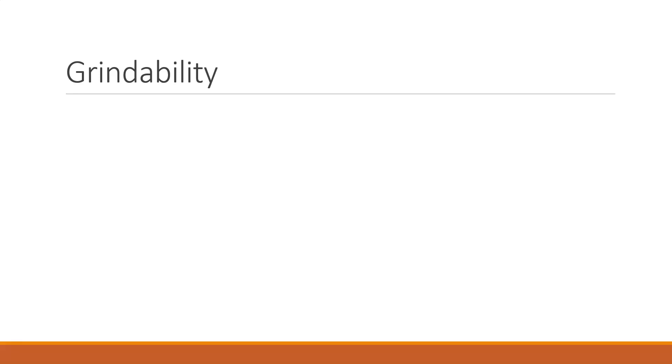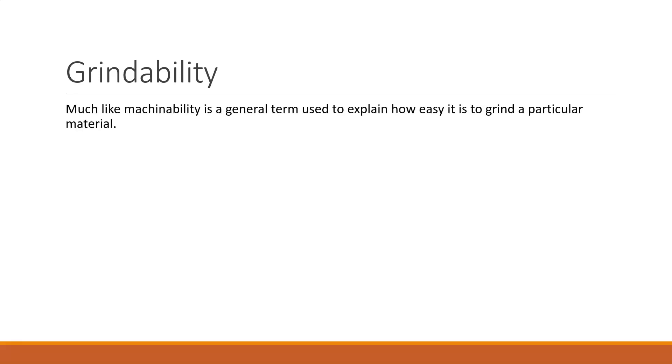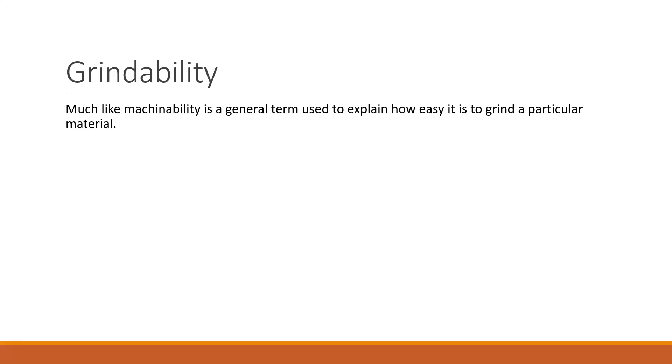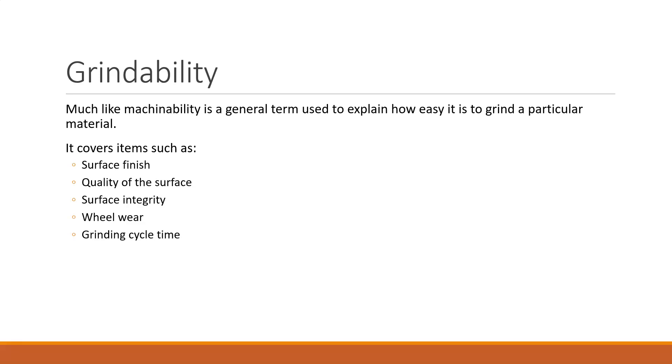Grindability is analogous to machinability. Just as machinability covers cutting forces and how aggressively or conservatively you can cut something, grindability is the ability to remove metal through the grinding process — taking into account the surface finish you can achieve, the tolerances you can hold, how fast the wheel wears, and cycle time. It covers surface finish quality, cracking, waviness, and surface integrity, and can be greatly influenced by cutting parameters, tool selection, and coolant selection.